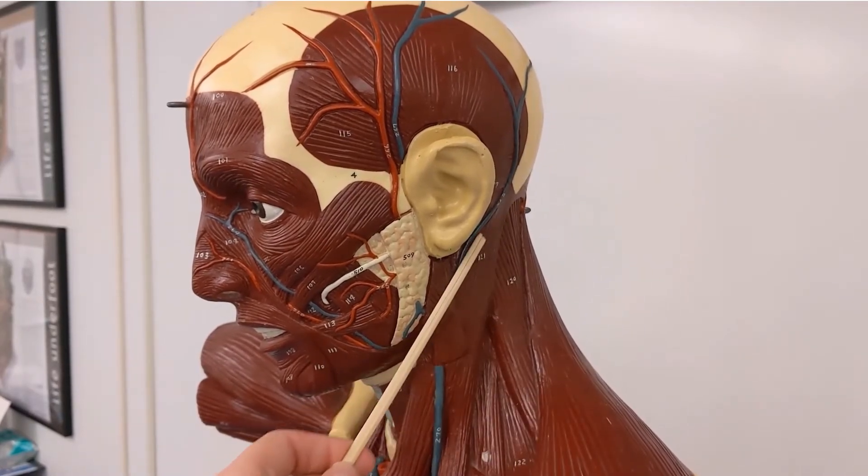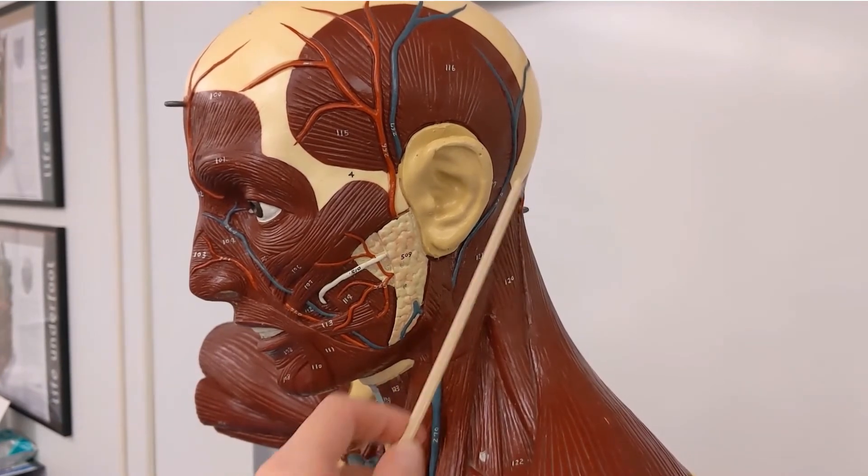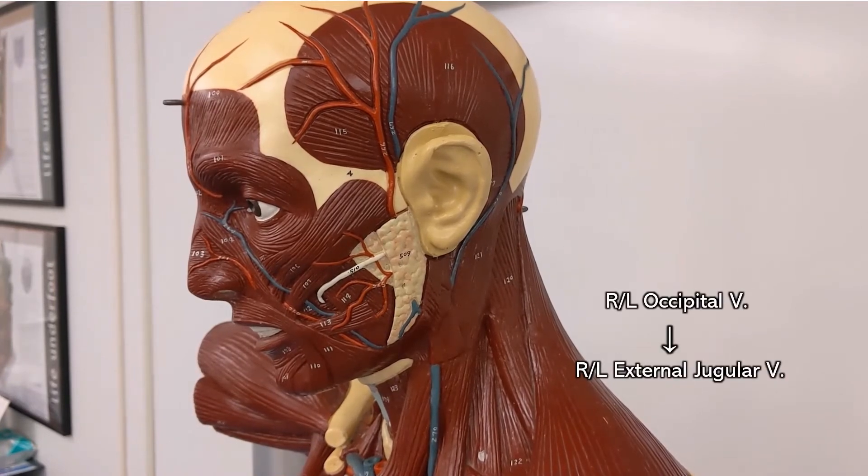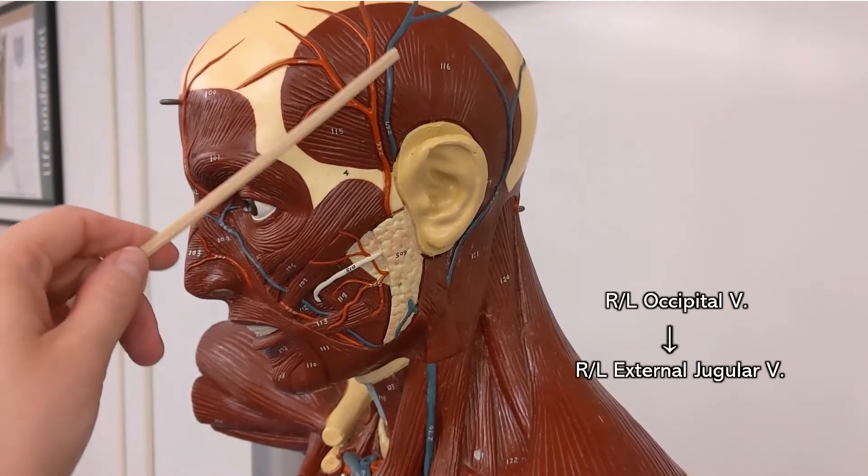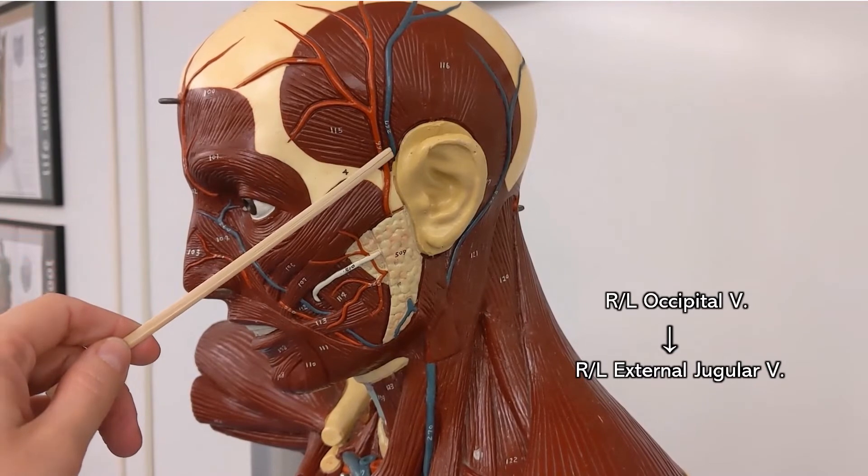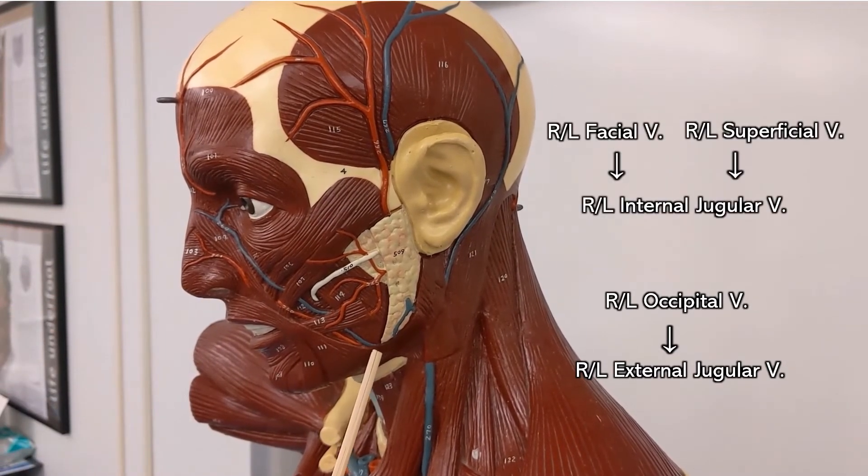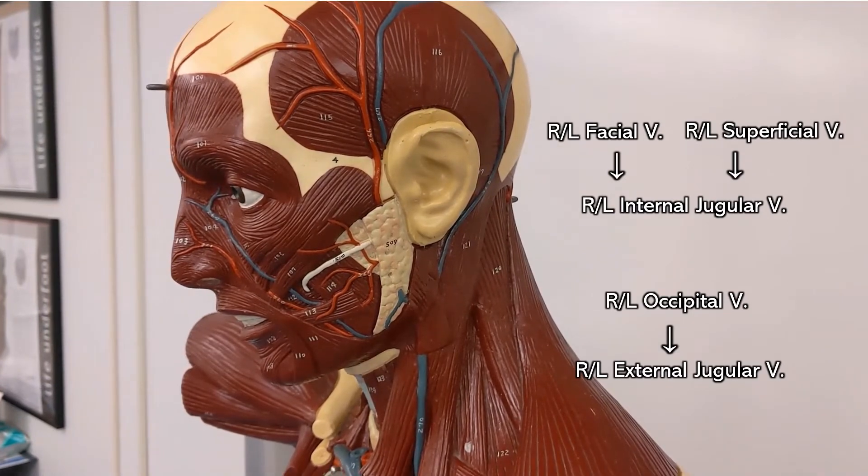Feeding into the external jugular is the occipital vein and feeding into the internal jugular is the superficial temporal vein and the facial vein. So the internal jugular vein is receiving some blood from the superficial parts of the face but more importantly it's receiving deoxygenated blood from the brain.